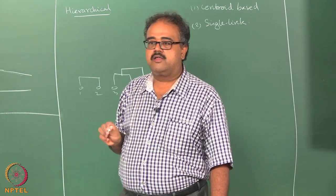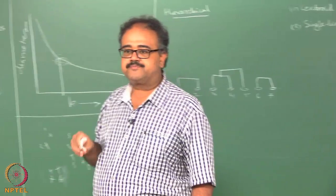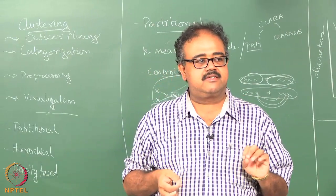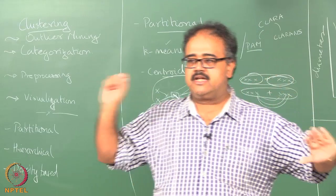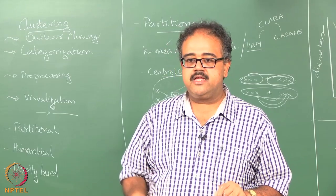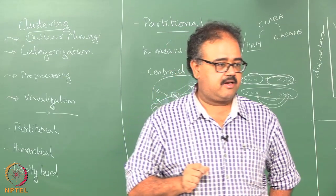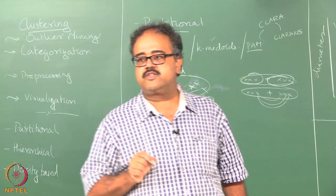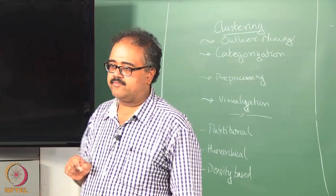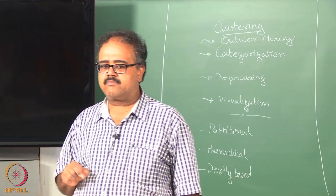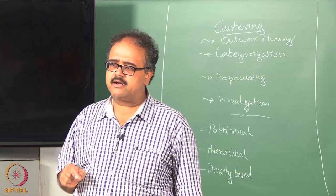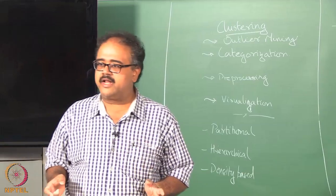One thing people use is called single link distance. So I look at two clusters, I look at the pairwise distance of taking one point from this cluster and another point from that cluster. I look at all possible pairs, then I look at the closest such pair, and use that as my distance between the two clusters. So if there are five points here and two there, I do ten pairs.